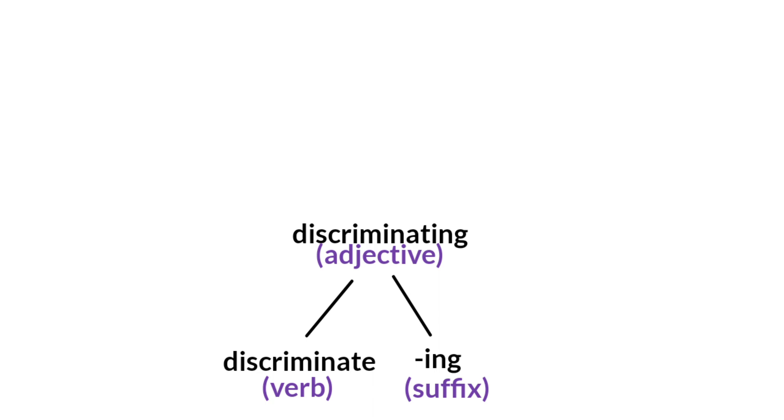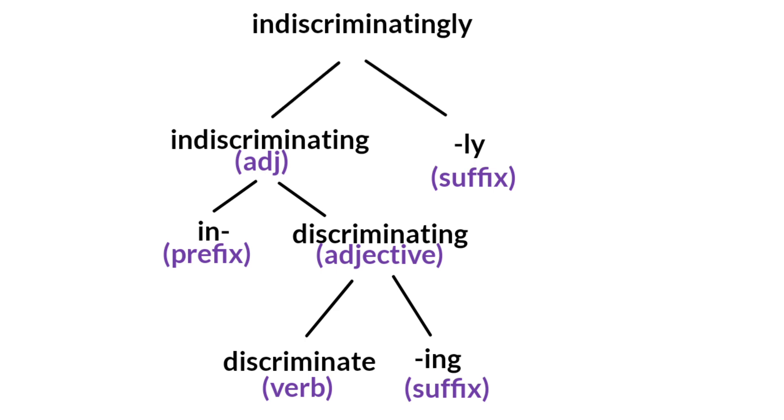Now we already have the word discriminating. And if we add another prefix in-, we can form a new word which is indiscriminating. Now add another suffix -ly, we can finally have the word indiscriminatingly, and now it becomes an adverb. So this is how it is structured when we use the bottom to top approach.